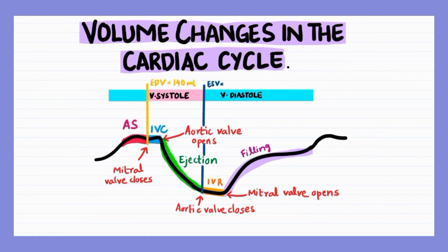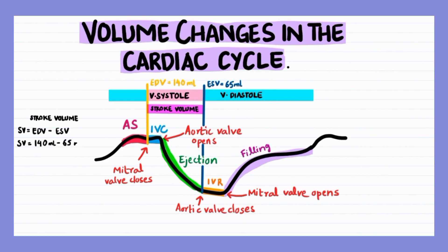The volume left in the ventricles at the end of systole, that is after blood has been ejected from the heart, is called end systolic volume, and is around 65 milliliters. The difference between the end diastolic volume and end systolic volume gives the volume of blood ejected from the heart in one stroke or one heartbeat. This is known as the stroke volume and is about 75 milliliters.